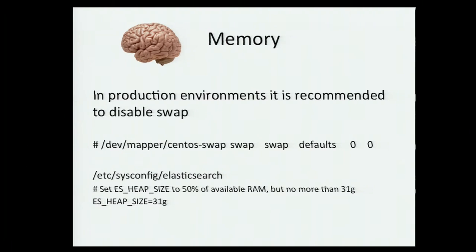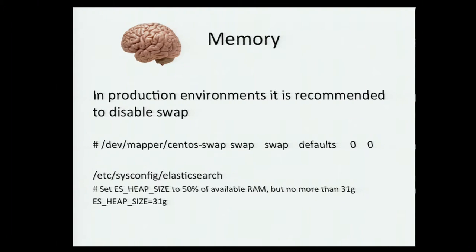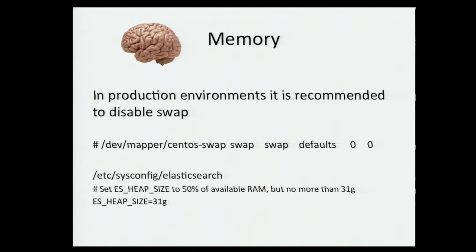On memory: when you're running this in production, I just disable swap completely. You don't want your Elasticsearch cluster to swap — I just put a pound sign in front of it and I'm done. Also, one important thing is your heap size. It's Java — they don't want you to go over 31 gigs. If you've got 64 gigs, just set 31 gigs and you should be good to go.